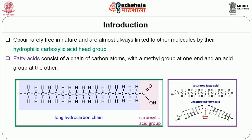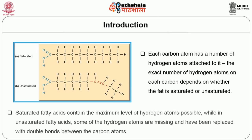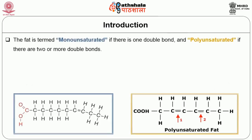Fatty acids consist of a chain of carbon atoms with a methyl group at one end and an acid group at the other. Each carbon atom has a number of hydrogen atoms attached to it. The exact number depends on whether the fat is saturated or unsaturated. Saturated fatty acids contain the maximum level of hydrogen atoms possible, while in unsaturated fatty acids some hydrogen atoms are missing and replaced with double bonds between carbon atoms. The fat is termed monounsaturated if there is one double bond, and polyunsaturated if there are two or more double bonds.